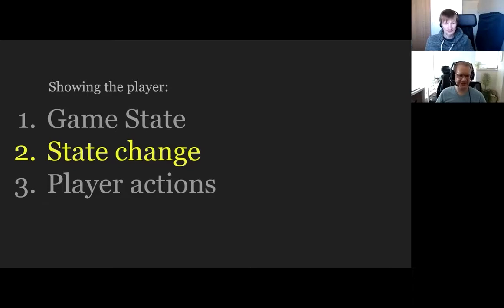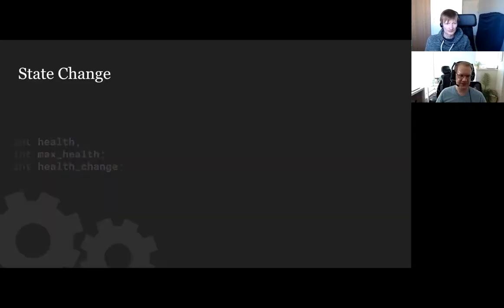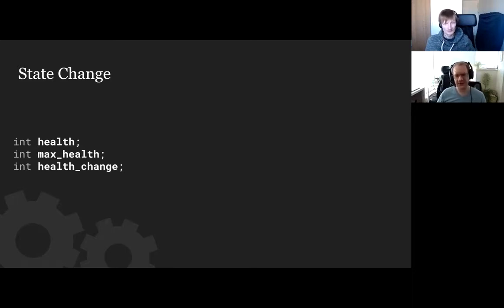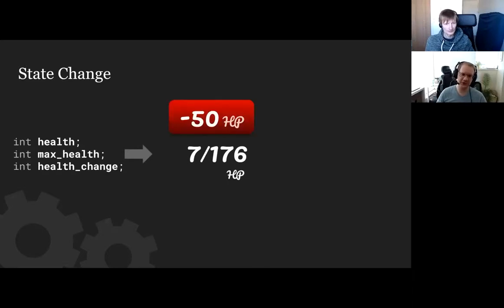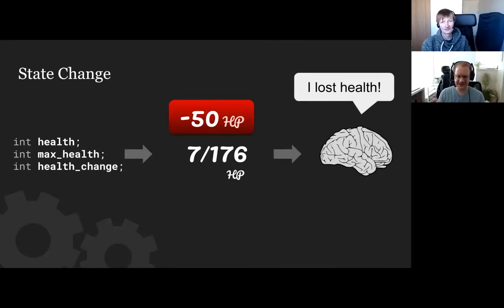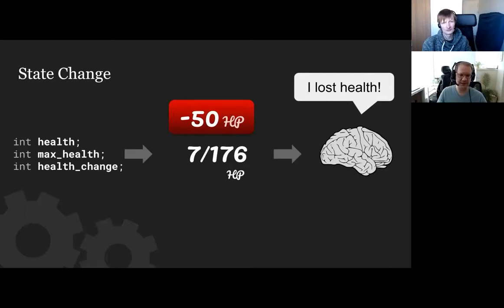Let's talk about state change. Imagine you've got a health system and you want to show a health change — some recent change over time, like you've taken damage or been healed. With our trusty health bar, it's a simple case of showing the change and the player knows they've lost health. I think separating the current state versus what changed is really useful for players. If you don't have this, sometimes you might suddenly die and you don't know why, because the game wasn't showing you that you'd been losing health.